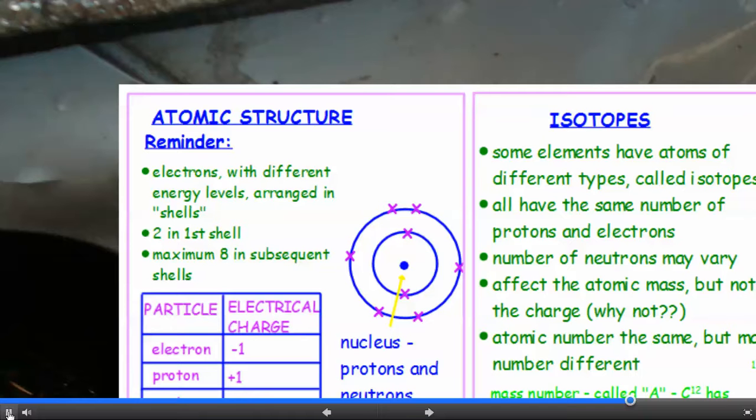And if you remember, electrons have an electrical charge of minus one, protons plus one, and neutrons, no charge, they're neutral.